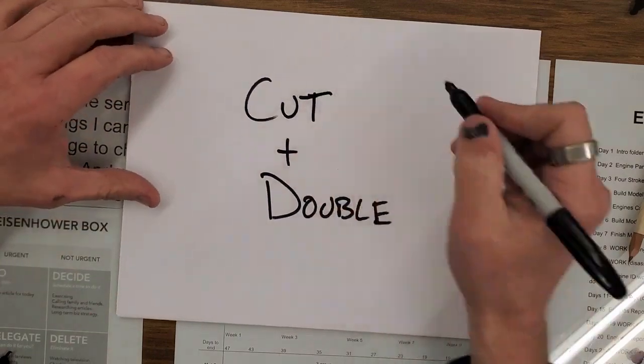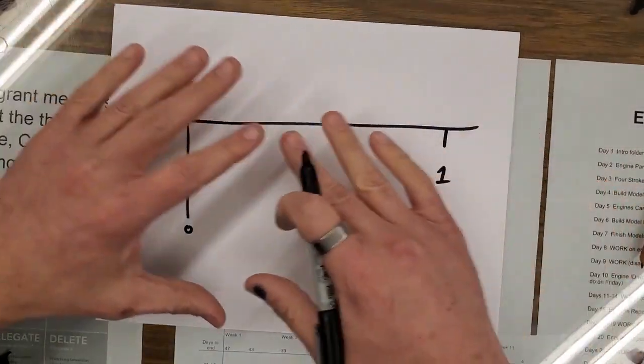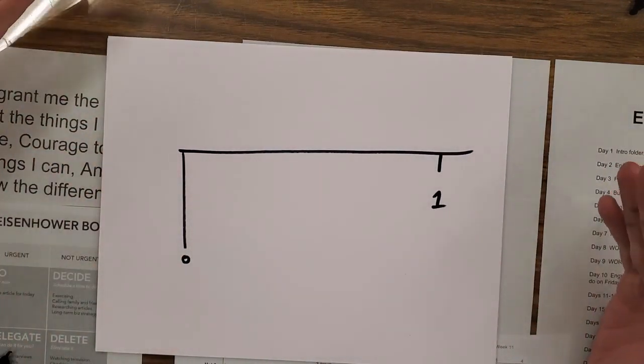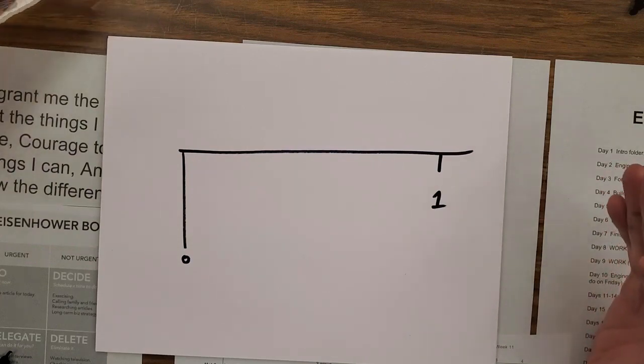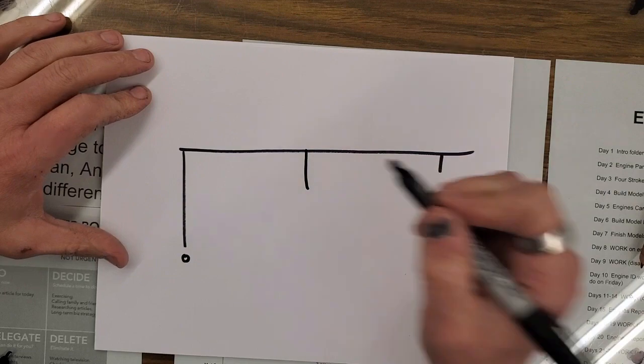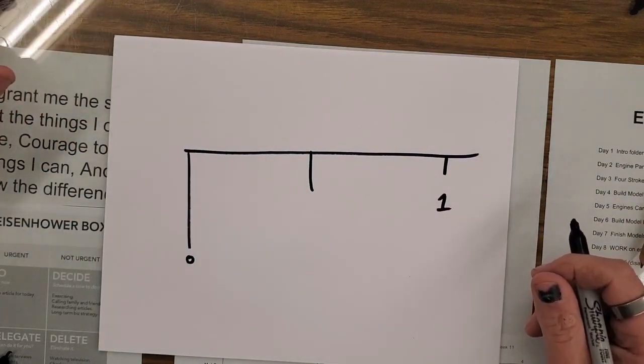What we're going to do is cut whatever space we have in half. And this isn't accurate. We're not actually measuring things. We're just estimating. I'm going to say about there's the middle. I cut the space in half. That's step one.